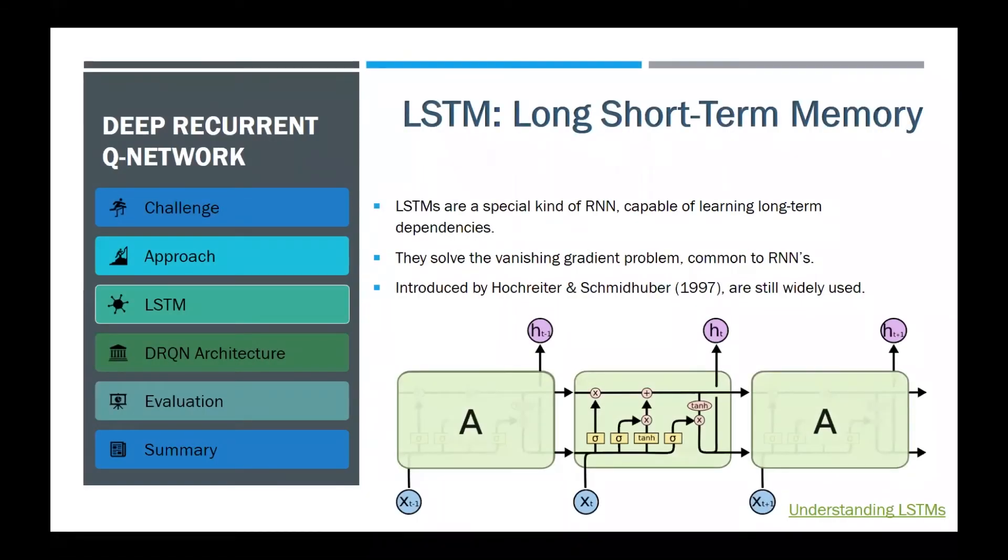LSTM, long short-term memory. The long-term dependency problem is a known problem of recurrent neural networks to remember information for long periods of time. LSTM cell solves this problem. The cell remembers values over arbitrary time intervals. Its three internal gates regulate the flow of information into and out of the cell.